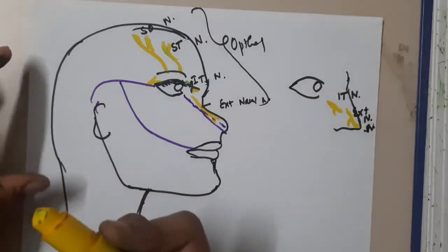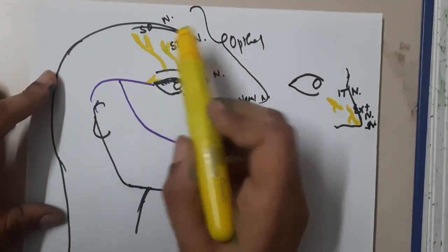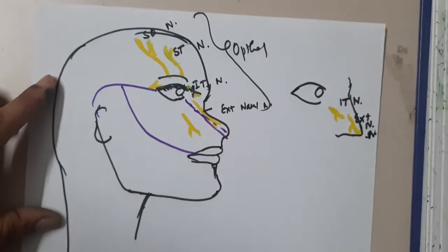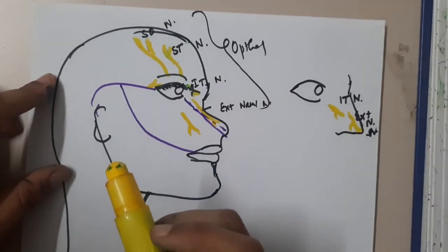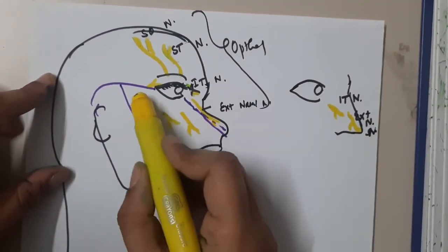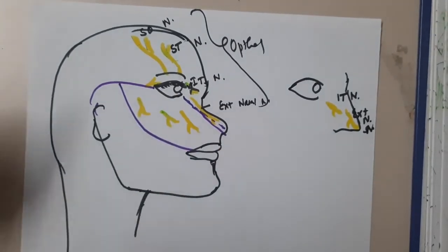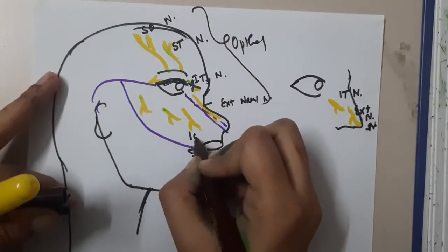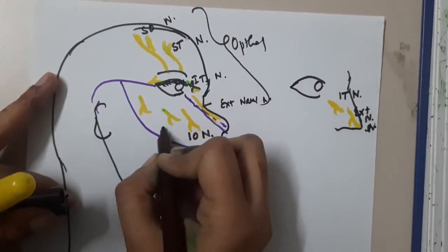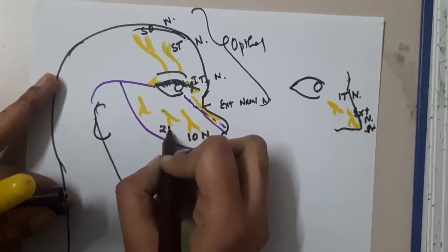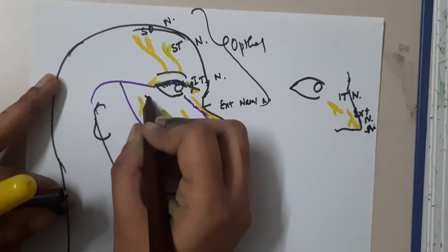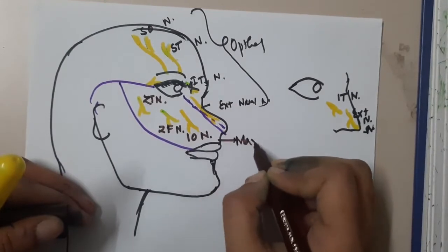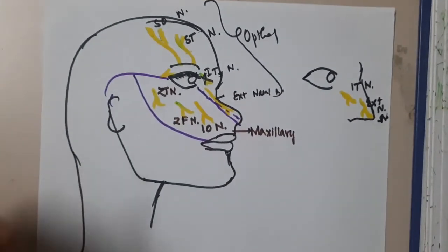For the maxillary division of the trigeminal nerve, we have the infraorbital nerve, the zygomaticofacial nerve, and the zygomaticotemporal nerve located laterally. These are all branches of the maxillary division.